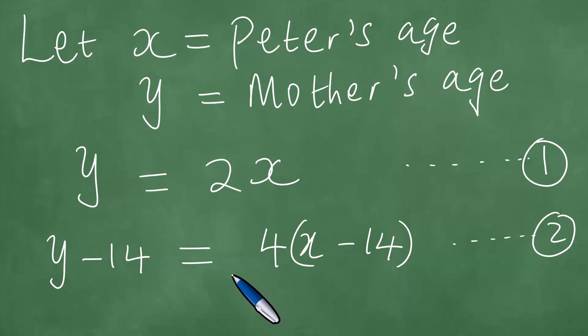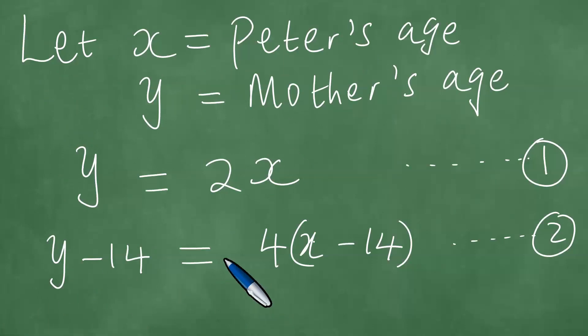And we then say put one into two. So if you put equation one into equation two, meaning wherever there is y, you put 2x because y equals 2x. So we're going to have therefore 2x minus 14.